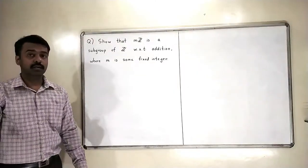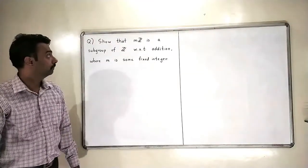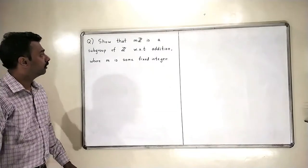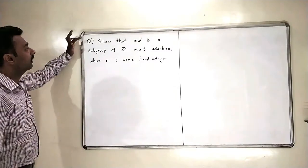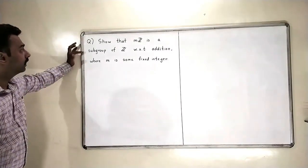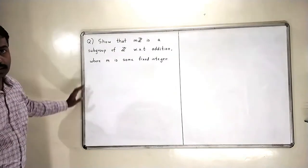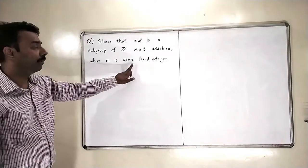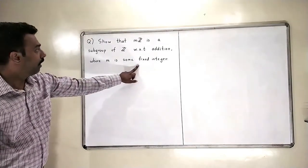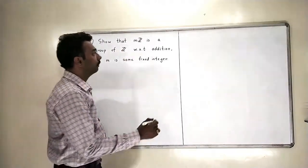Now, let us go for the next problem. In this problem, we have to show that mZ is a subgroup of Z with respect to the addition operation, where m is some fixed integer. Now, let us take one small example here.